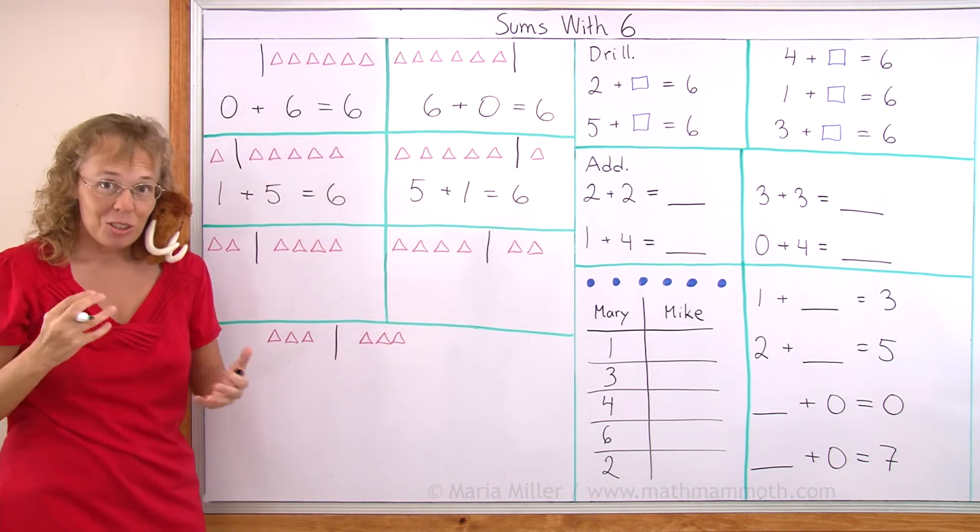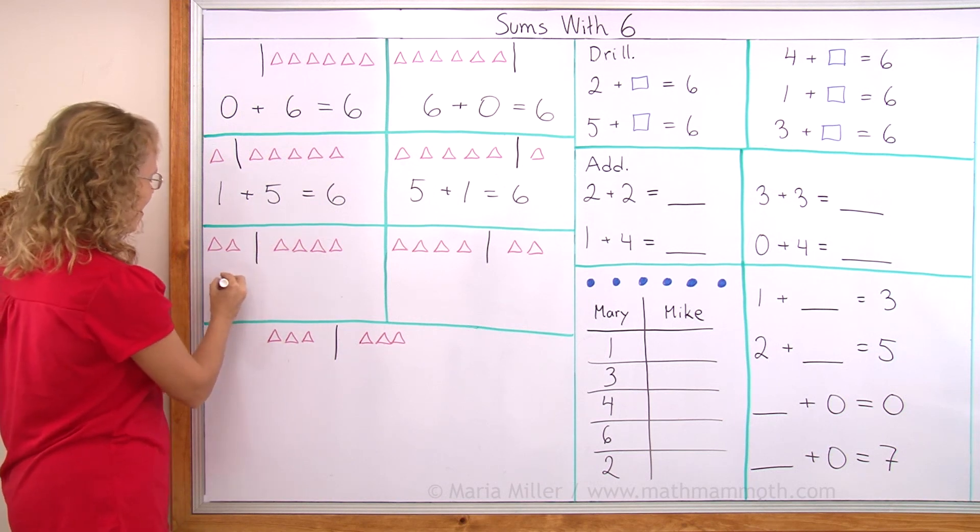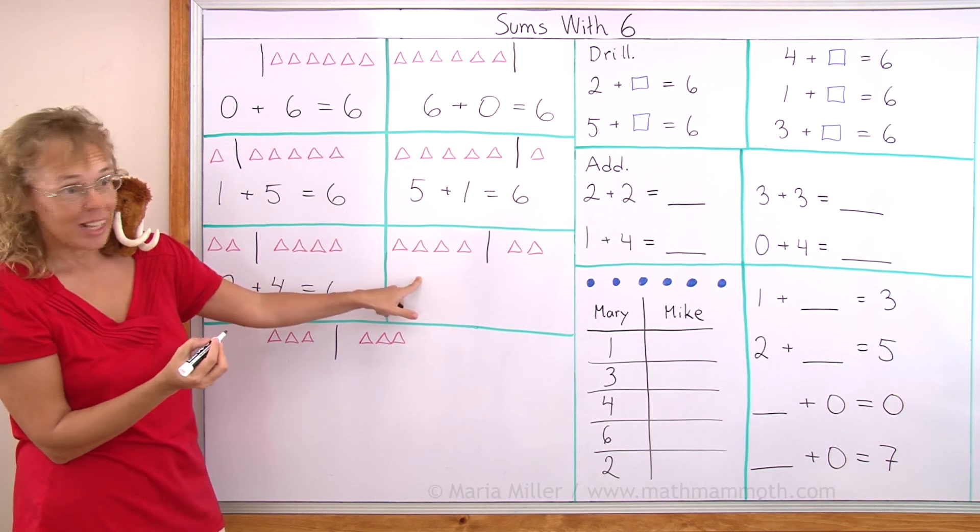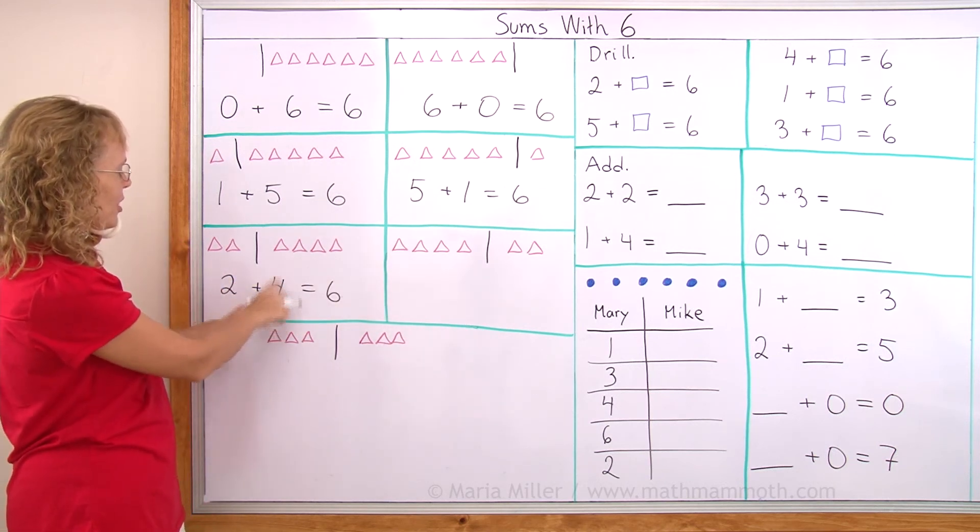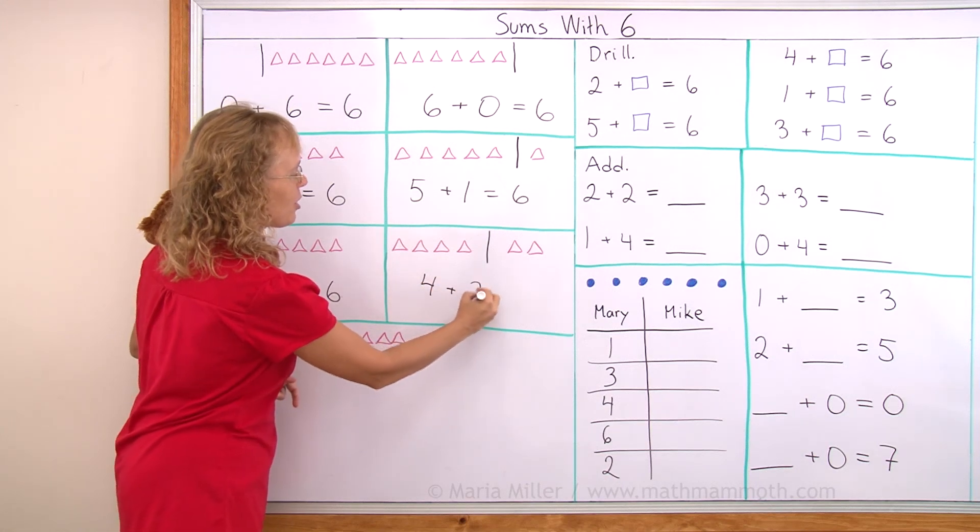Here's yet a different way to make two groups with six triangles. Two on this side and four on that side. Two plus four equals six. And how about here? Can you tell? Just take two and four and switch them. We have four and two. Four plus two also makes six.